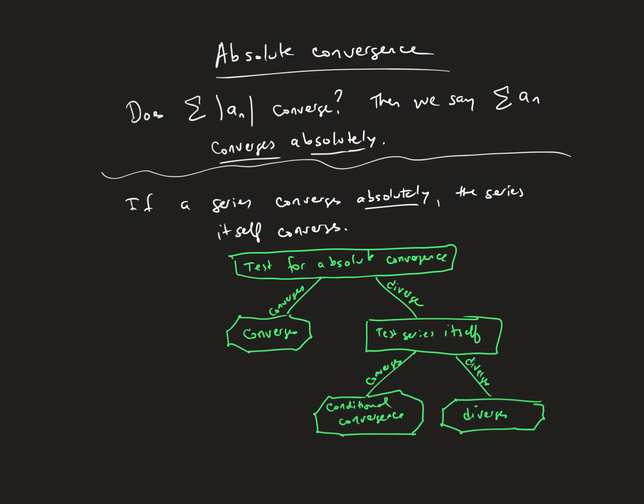Now, a really quick example of conditional convergence is the alternating harmonic series, which looks like this. So alternating harmonic series, negative 1 to the n over n. So if I tested this for absolute convergence, I would basically be looking at the absolute value of negative 1 to the n over n, which gets rid of the alternating part, and turns it into just 1 over n. That's the harmonic series that diverges.